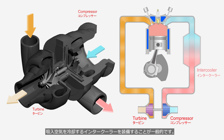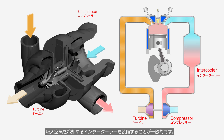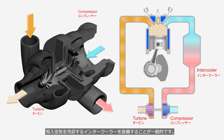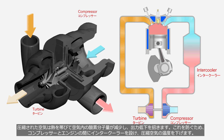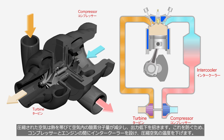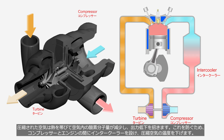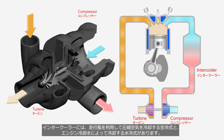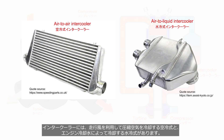It is common for this system to be equipped with an intercooler to cool the intake air. Compressed air becomes heated, causing a decrease in the oxygen molecule content within the air, leading to a reduction in output. To prevent this, an intercooler is installed between the compressor and the engine to lower the temperature of the compressed air. Intercoolers come in two types: the air-to-air intercooler, which uses airflow during driving to cool compressed air, and the air-to-liquid intercooler, which relies on engine coolant for cooling.